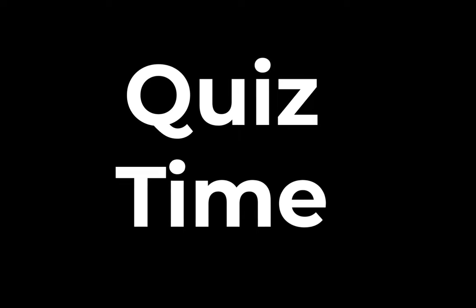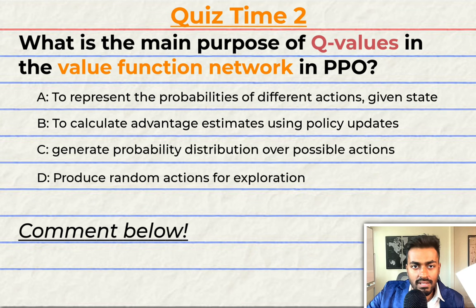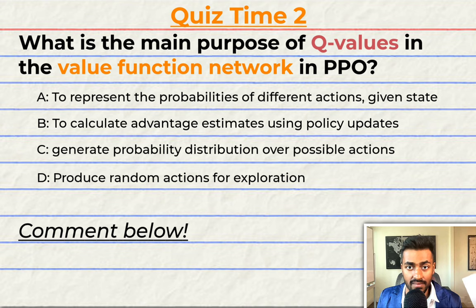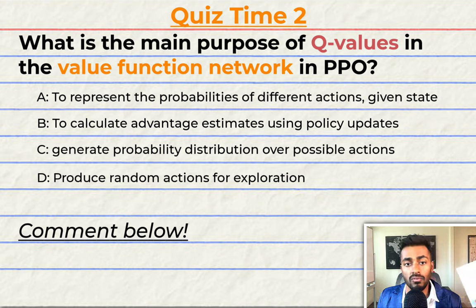Quiz time! Have you been paying attention? What is the main purpose of the Q values produced by the value function network in PPO? A: to represent the probabilities of different actions given a state. B: to calculate the advantage estimates using policy updates. C: to generate a probability distribution over possible actions. Or D: to produce random actions for exploration. Comment your answer below and let's have a discussion. That'll do it for quiz time and also pass two — but keep paying attention because I will be back to quiz you.